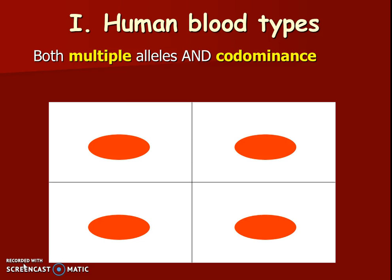For human blood types we're going to be looking at not only codominance but also this idea of multiple alleles. Multiple alleles means that there are a lot more versions of traits than we're used to — more than three is the definition of multiple alleles.